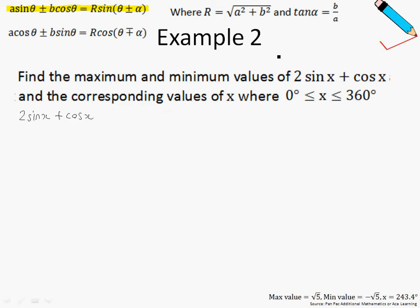Our given parameters should be a equals to 2 and b equals to 1 — there's actually an imaginary 1 over here if you can't see it. So using these parameters, let us work out our R. R is square root of a squared, which is 2 squared, plus b squared, which is 1 squared. And this works out to be square root of 5.